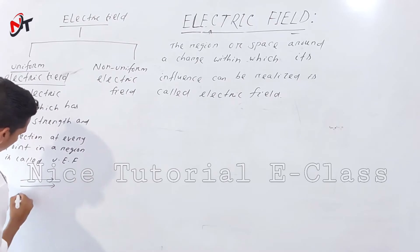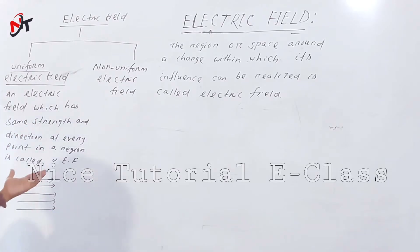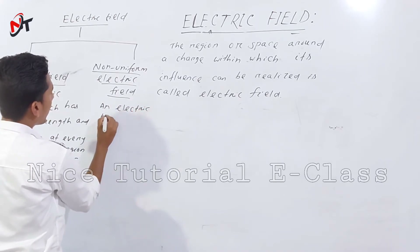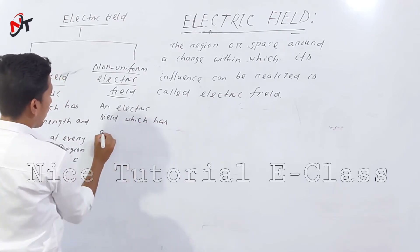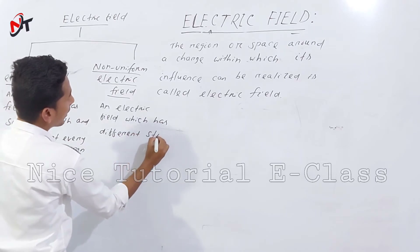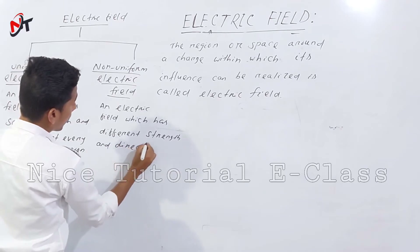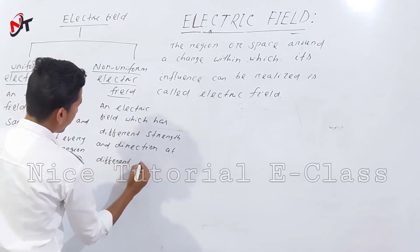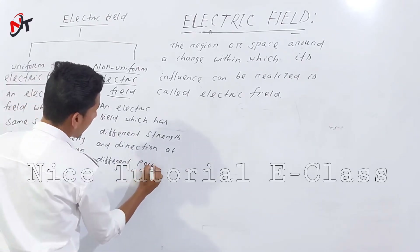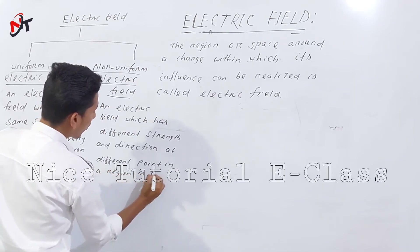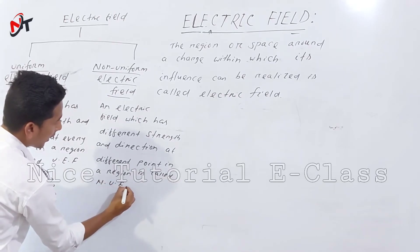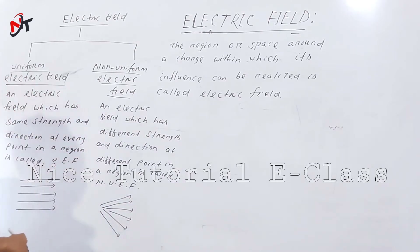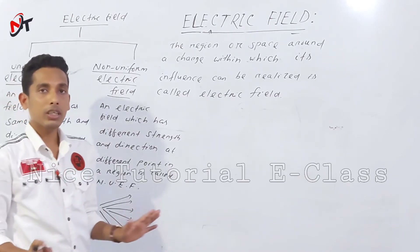Similarly, an electric field which has different strength and direction at different points in a region is called a non-uniform electric field. The direction and strength being the same throughout defines a uniform electric field. Is that clear? Yes.